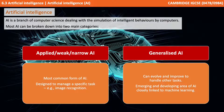Most AI can be broken down into two main categories. First we have applied, weak or narrow AI. This is designed to manage a specific task and it's the most common form of AI.